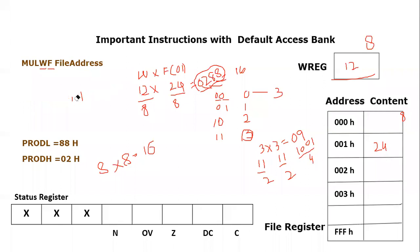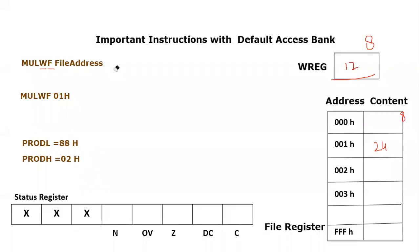Whenever you use the MULWF instruction, the result is always stored in PRODL and PRODH — these are the default destination locations. There is no other destination. PRODL holds the lower byte and PRODH holds the higher byte, and both are part of the file register as special function registers. I hope you understand the function of this instruction. If you have any confusion, you can post in the comment section. Thank you so much for listening.